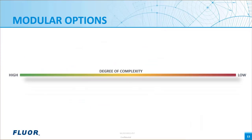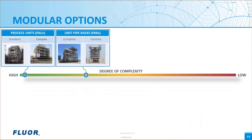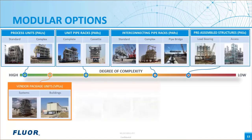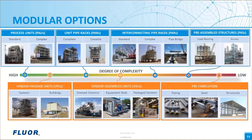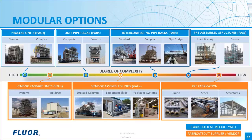The range of modular options available to a project includes process modules, unit pipe racks, interconnecting pipe racks, pre-assembled structures, vendor package units, vendor assembled units, and various types of prefabrication. Within this slide, you can see many examples of modules which Fluor has fabricated, assembled, and delivered. Their associated complexity is graded from left to right — with the most vendor-supplied items on the left and assemblies of fabricated bulk materials on the right. Above the line shows modules engineered mainly within Fluor engineering departments; below the line are items which may be designed by subcontractors.